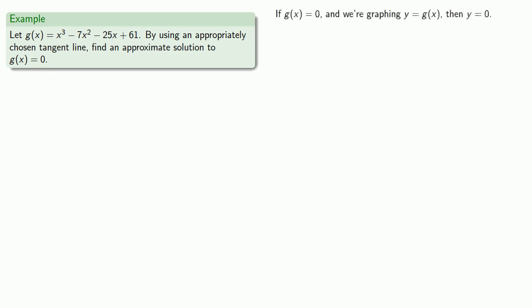If g(x) = 0 and we're graphing y = g(x), then y is equal to 0. In other words, we're looking for where the curve crosses the x-axis.